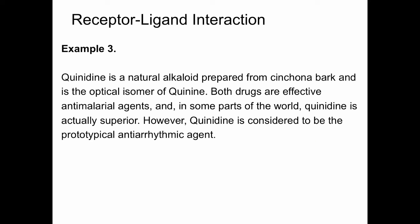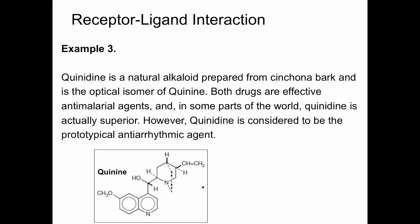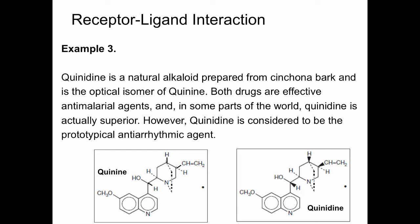This idea can translate into clinical utility. Take the example of quinidine, a natural alkaloid prepared from cinchona bark and the optical isomer of quinine. Both drugs are effective antimalarial agents, and in some parts of the world quinidine is a superior antimalarial agent. However, quinidine is really considered the prototypical antiarrhythmic agent. Again, they are optical isomers or enantiomers of each other, but they have completely different therapeutic utility.